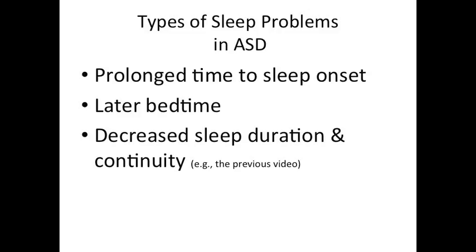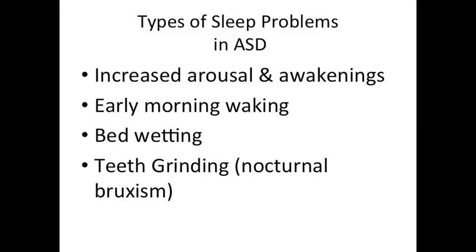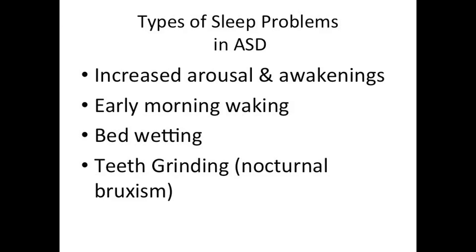Decreased sleep duration and continuity — the kid goes to bed, then is up, restless, crying, moving around, back to sleep. Increased arousal and wakening — the kid who wakes up at 2:37 and says 'Pancakes and Lion King, anybody? Let's party.' Early morning wakings — some kids just get up at 5 a.m. clockwork, no matter what you do with naps or bedtime. Their parents took them to the pediatrician and they just threw up their hands and said, 'This is his nervous system. He gets up at 5.' And the fact that they're getting up so early can be a bit of a challenge.